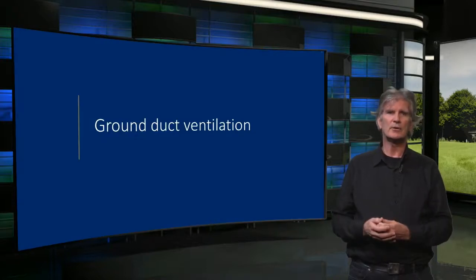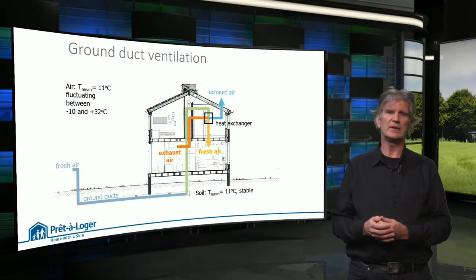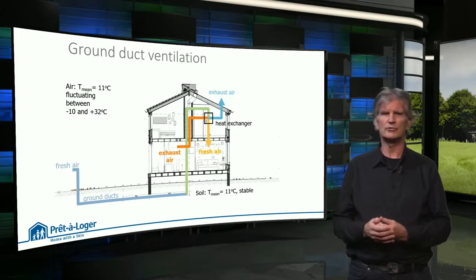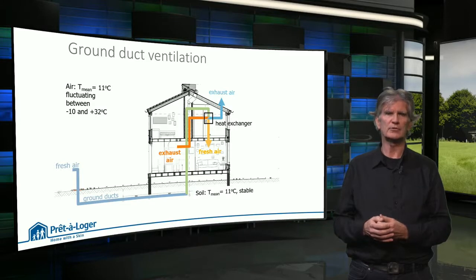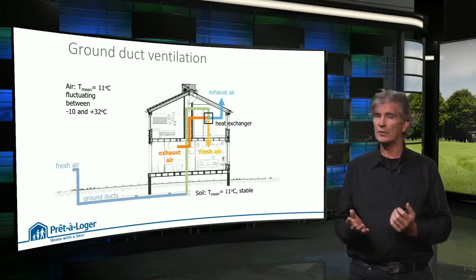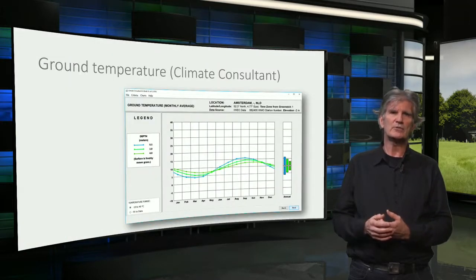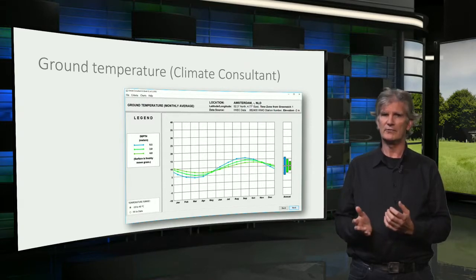Finally, I will show you a completely different way to exchange heat: ground duct ventilation. Here the incoming air for the ventilation system is let through a duct that is buried underground, at a depth of 1 to 2 meters. The ventilation air is preheated or precooled to the ground temperature before it enters the building. Depending on the ground temperature at your location, this can help to reduce the heating demand in winter or the cooling demand in summer. With the program Climate Consultant, you can find the temperature fluctuation in the ground at a depth of 0.5, 2 and 5 meters.